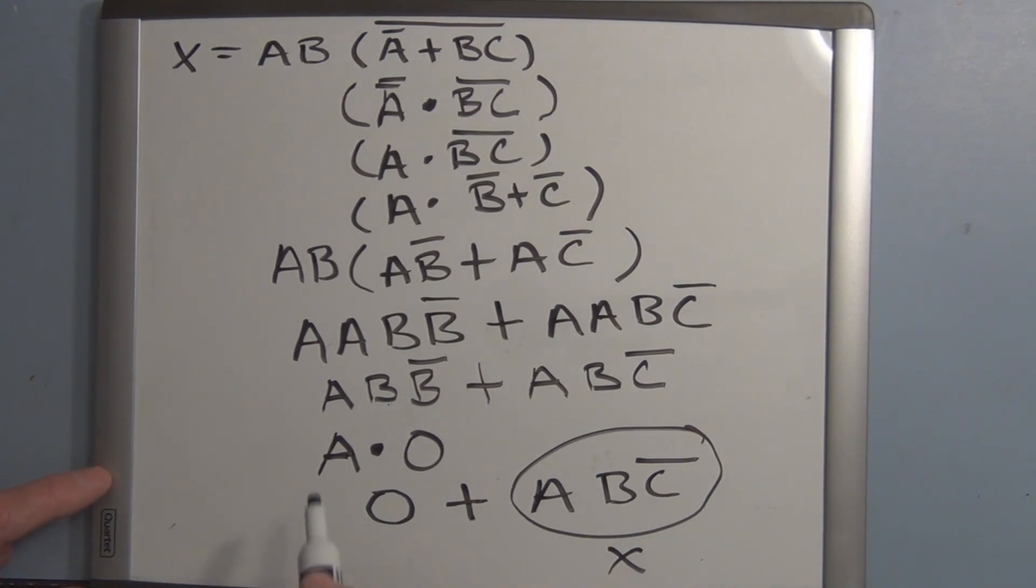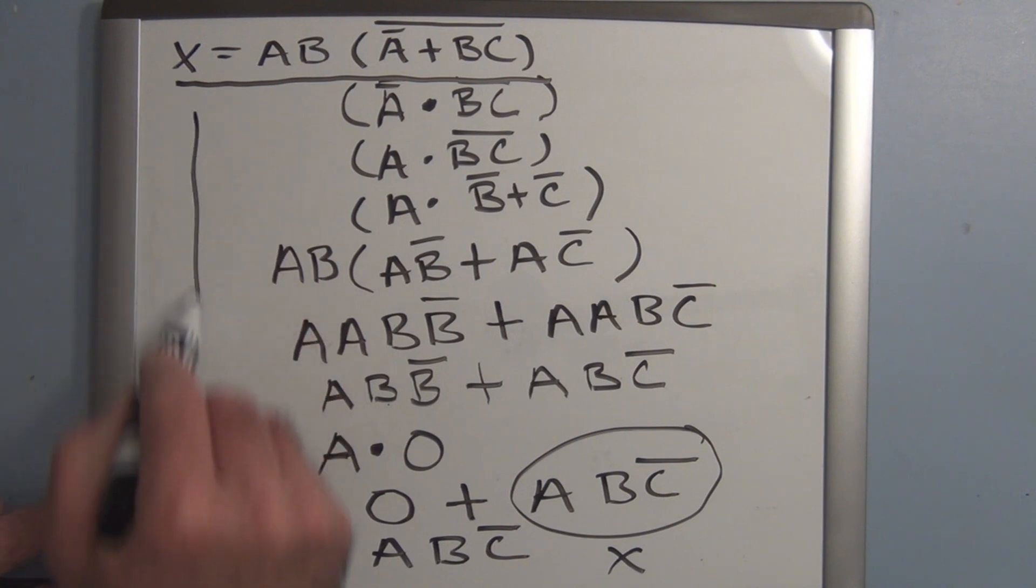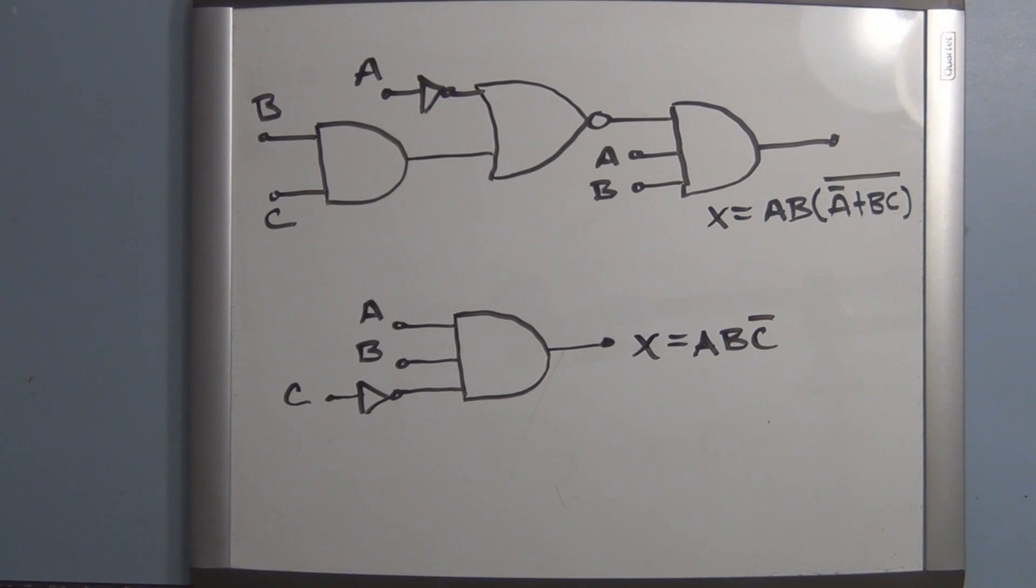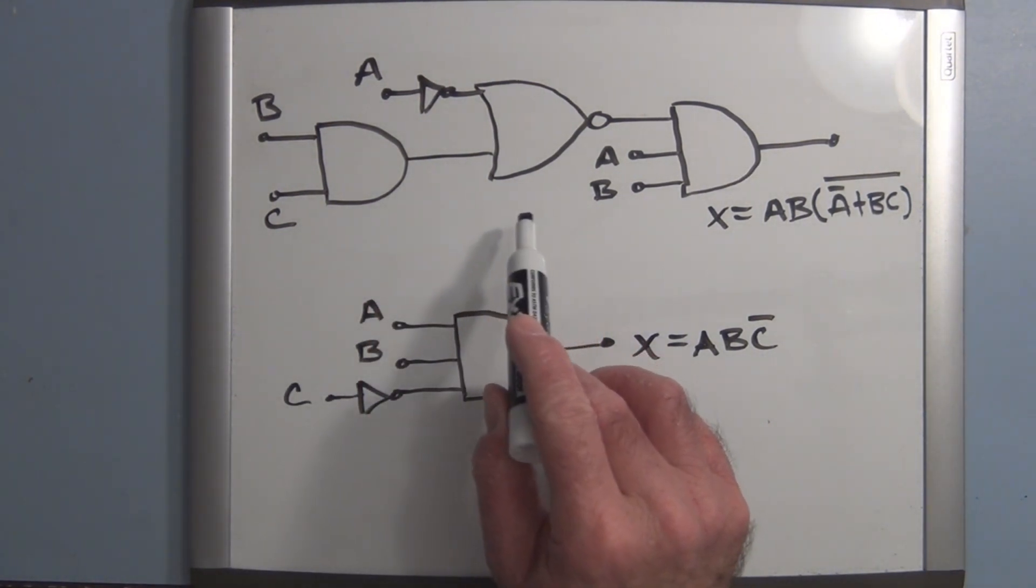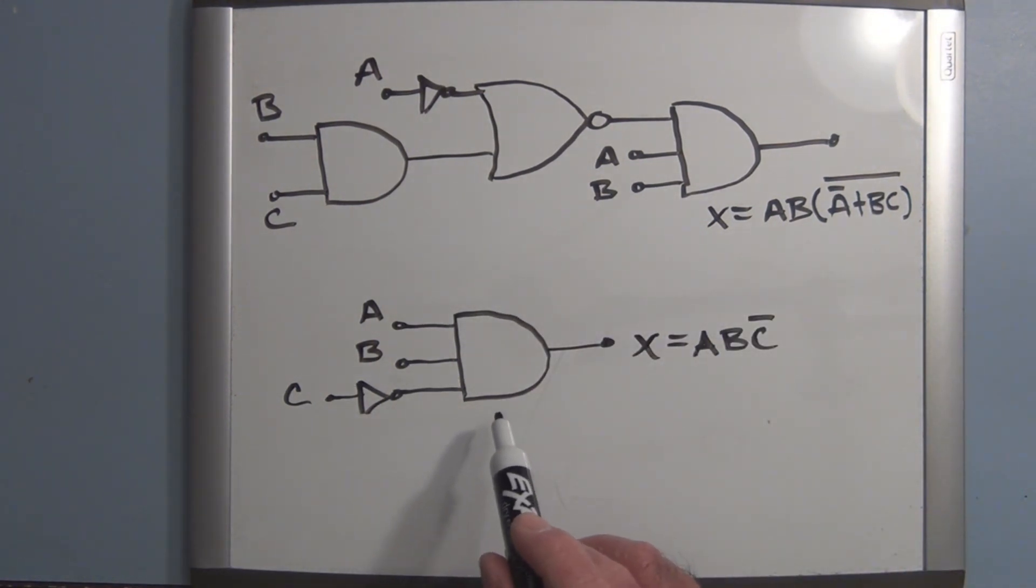So in essence x is equal to A, B, C not. So this line expression is equivalent to this expression here. So that's the process you use to get from this original Boolean circuit with its output expression to the simplified circuit with its output expression.